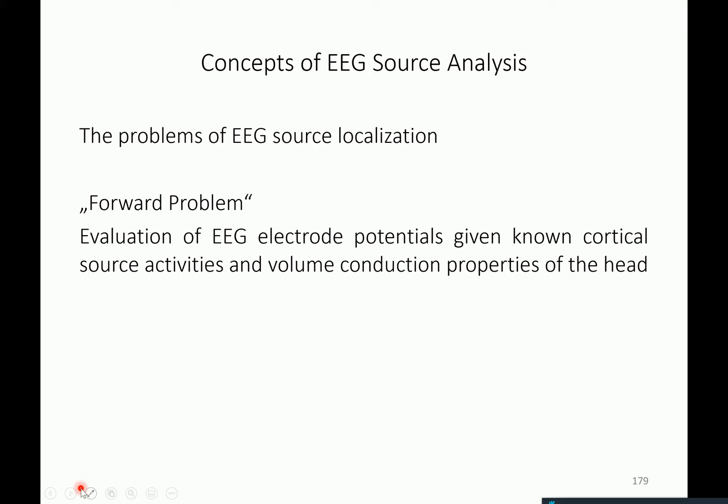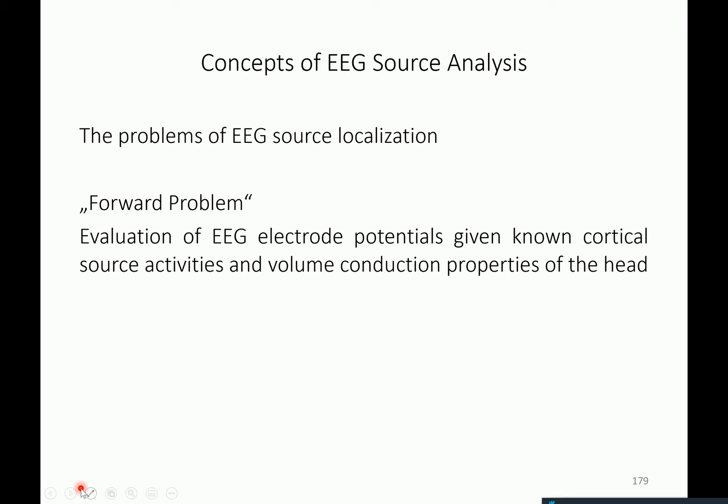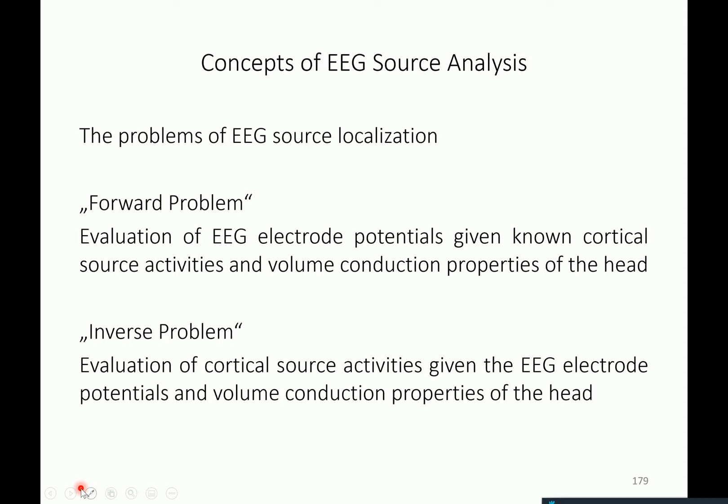The forward problem is non-trivial to solve — it is based on standard physics solutions and their mathematical solution in terms of the numerical solution of partial differential equations. The other problem, of more interest to cognitive neuroscientists, is to infer where the main activity is located based on some observed EEG data. This is the inverse problem, which is always conditional on the solution of the forward problem.